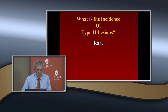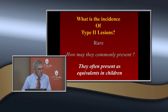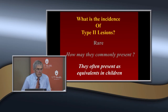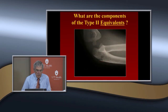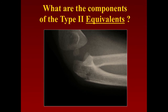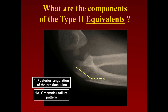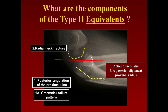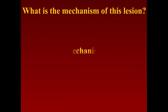Type 2 equivalents include: a greenstick fracture at the diaphyseal-metaphyseal junction with posterior angulation, and a radial neck fracture where the radial head remains reduced but overall ulnar alignment is posterior. The mechanism is flexion, so the correction involves extension — extending the elbow usually corrects the angulation and the radial head often reduces spontaneously.